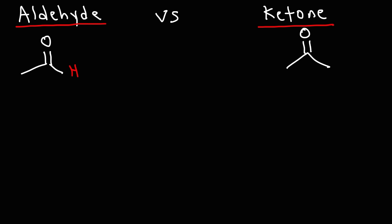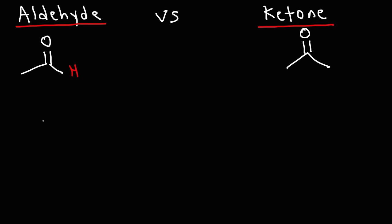Let's move on to our next two molecules, the aldehyde and the ketone functional groups. Both molecules contain the carbonyl functional group, and the CO stretch of these two functional groups is very similar to a carboxylic acid — it's around 1,700.